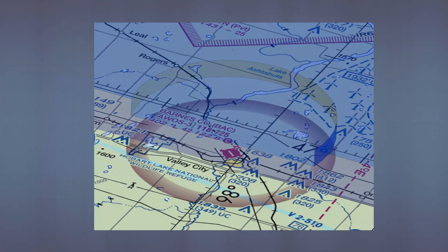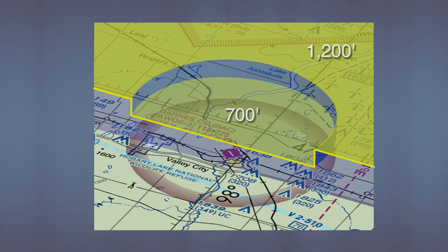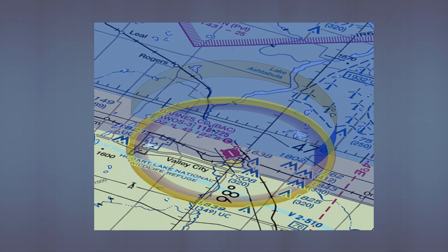But it's not just wide open land out there. There are airports, and the space around them needs to be just a little bit more structured. In these places, class G starts at the surface but only goes up to 700 feet near the airport, and then out to 1,200 feet. Any time you see the shaded magenta ring around an airport, this is what it's referring to.